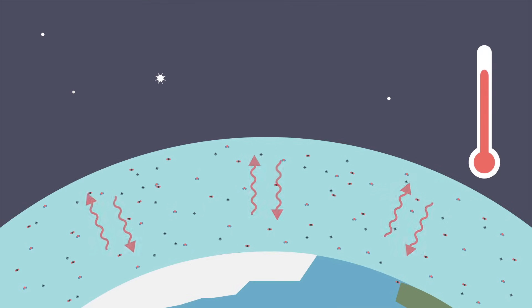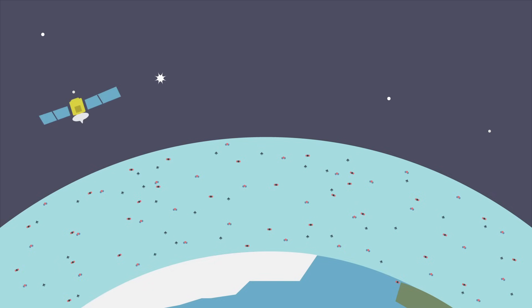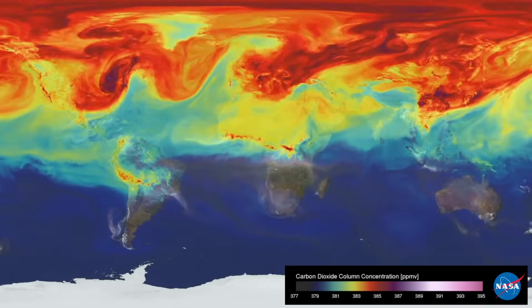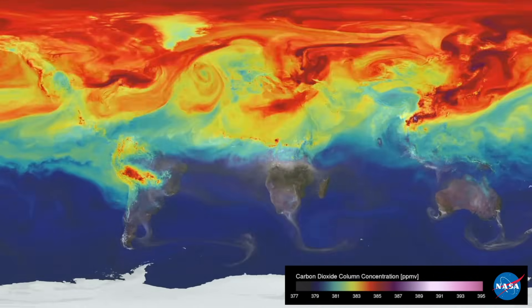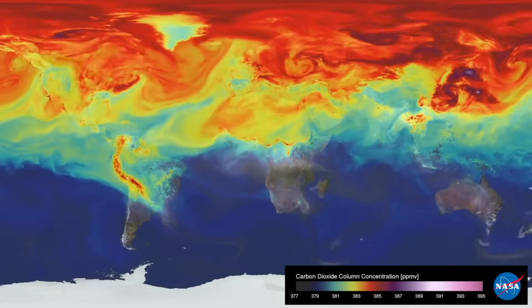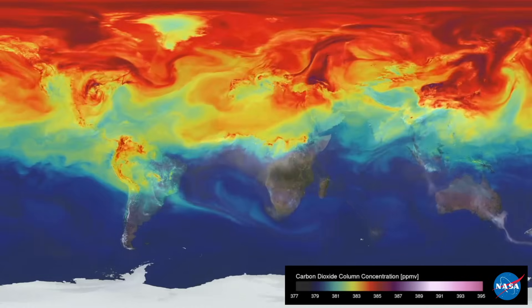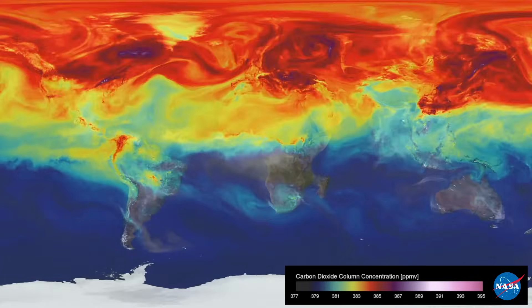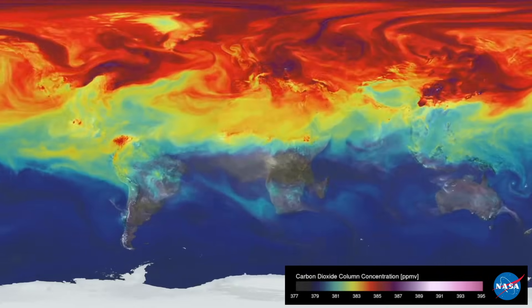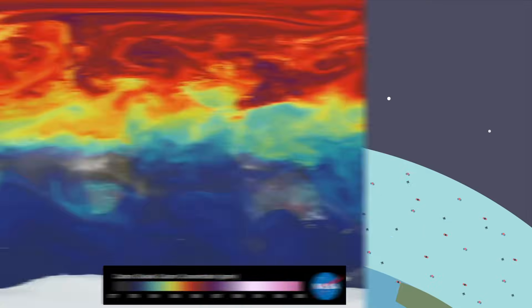NASA satellites are constantly measuring the gases in our atmosphere from space. They have observed increases in the amounts of carbon dioxide and other greenhouse gases. The information from NASA satellites can help scientists figure out where greenhouse gases are coming from and how they are ending up in our atmosphere.